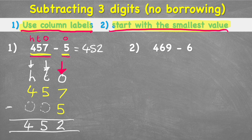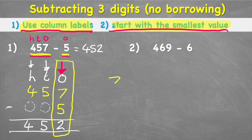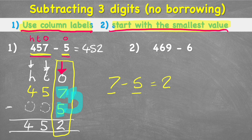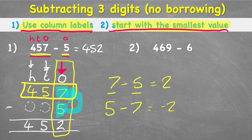I want to show you something really important. Our ones question was 7 subtract 5, which equals 2. Why do we start with 7 and put 5 second? Because 7 is the number on top — we're taking 5 away from 7. If we flipped it and did 5 subtract 7, that gives us a totally different answer: negative 2. So remember — the number on top goes first, and the number on the bottom is what we're taking away.